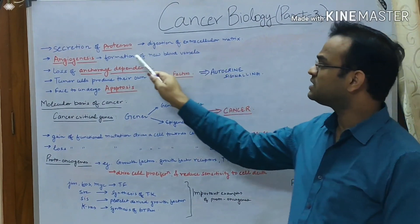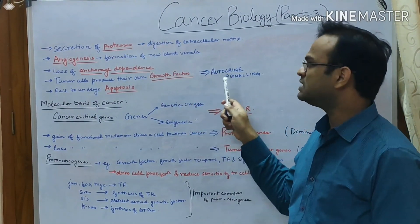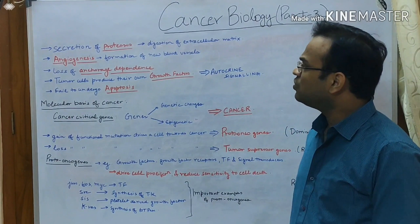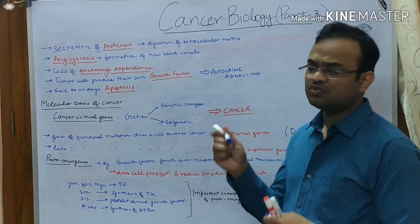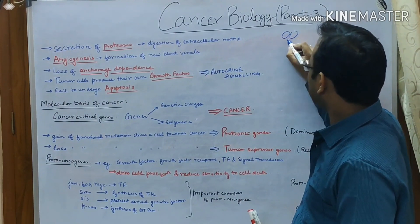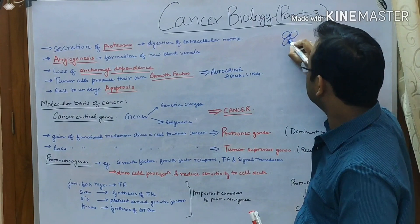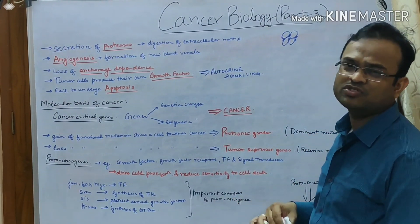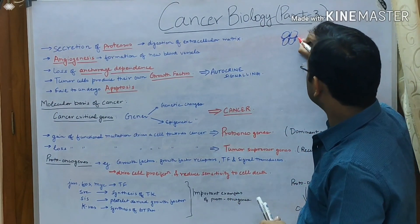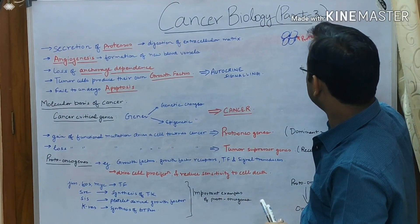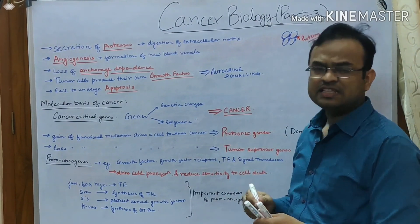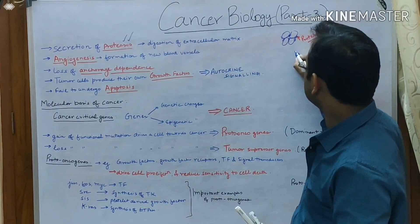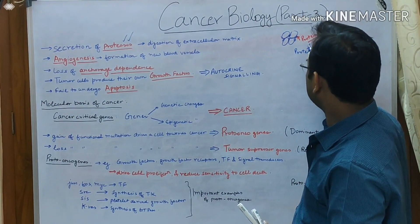The first point in today's lecture is that cancer cells are able to secrete proteases. Now, what does proteases mean or what is the function of proteases? We all know that cells are in a tissue, surrounded by other cells, and these cells are connected with each other through the extracellular matrix. This extracellular matrix is composed of different types of proteins.